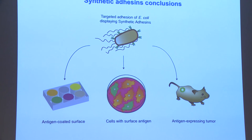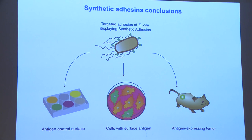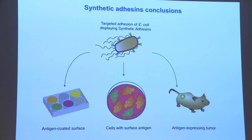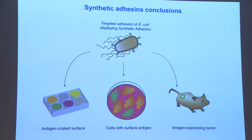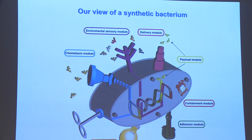To conclude this part: these adhesin constructs, expressed constitutively from the bacterial chromosome, allow targeting of specific cells, surfaces, or tumors in vivo. We are developing adhesins against real tumor markers, in areas where bacteria may access and deliver specific molecules to tumor cells or the tumor environment.